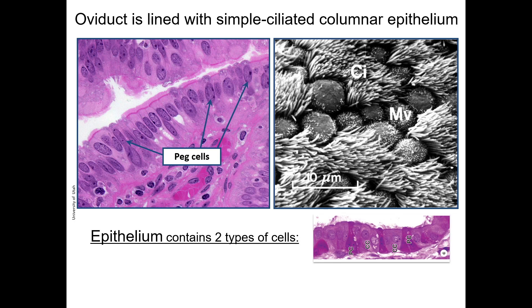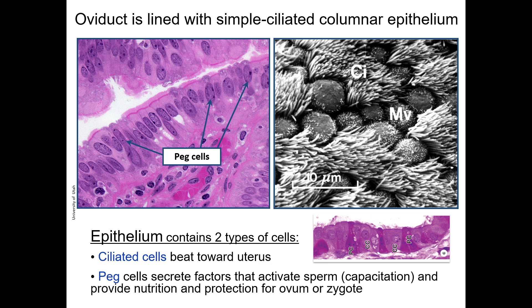Each oviduct is lined with simple ciliated columnar epithelium resting on a highly vascular lamina propria. There are two types of cells in this epithelium: the ciliated columnar cells and PEG cells, which are non-ciliated secretory cells indicated in this H&E stain section by the blue arrows. Their function is to provide nourishment for the zygote and to provide factors that will enhance sperm activation. Here in this H&E stain section you can see the two epithelial cell types, as well as an EM image that contrasts the ciliated and PEG cells. This epithelium will undergo cyclical changes during the menstrual cycle. The epithelial cells will hypertrophy and the cilia will elongate during the follicular or proliferation phase.